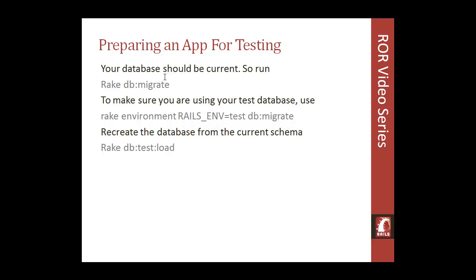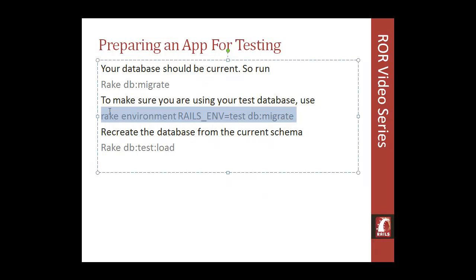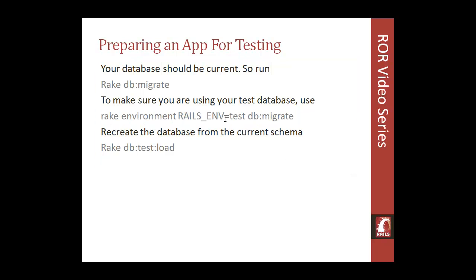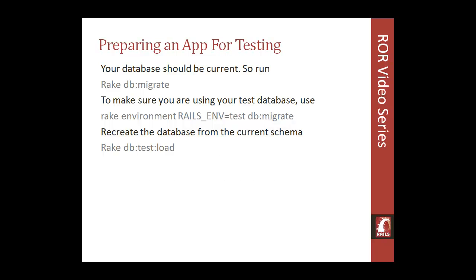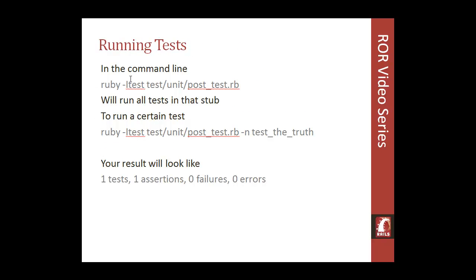To prepare your app for testing, you want to migrate the database and make sure it's up to date. In the next video we'll go into our database configuration file and create another database for testing — you can do that easily through pgAdmin or the command line. To migrate the test database, you specify the environment as 'test' rather than 'development'. Then you use the db:schema:load command to recreate the database from the current schema, loading your development schema into the test database so you don't mess with development or production data.